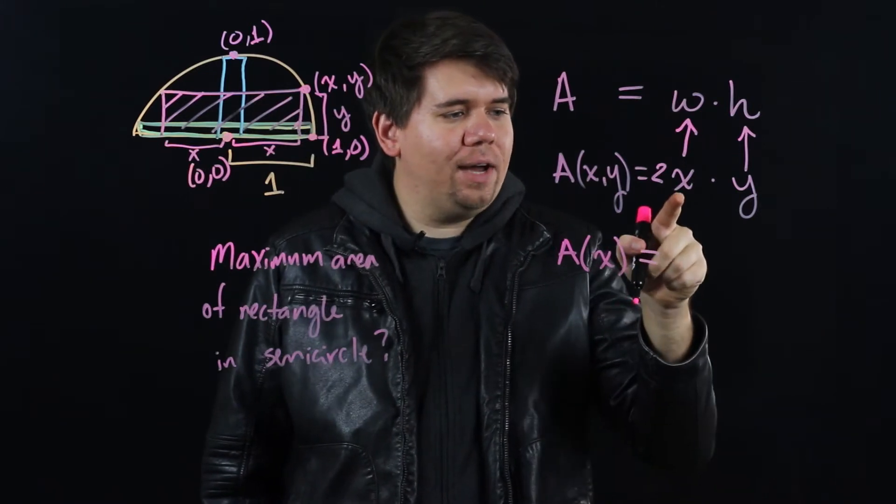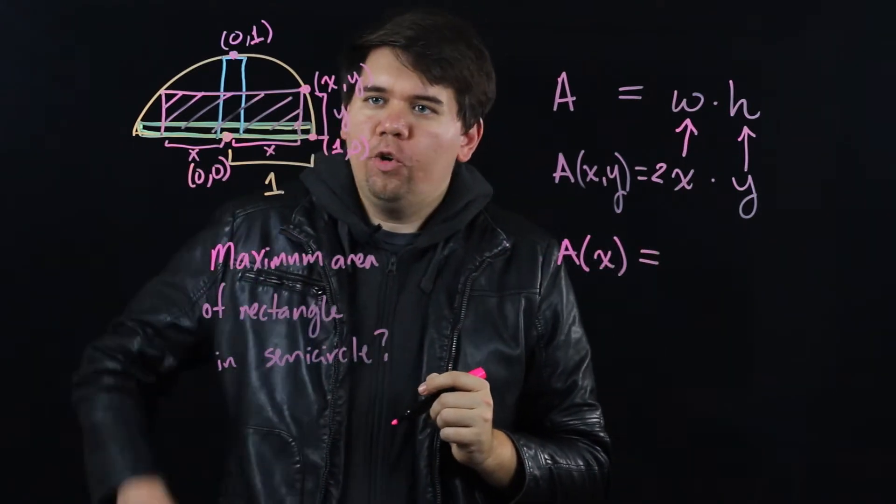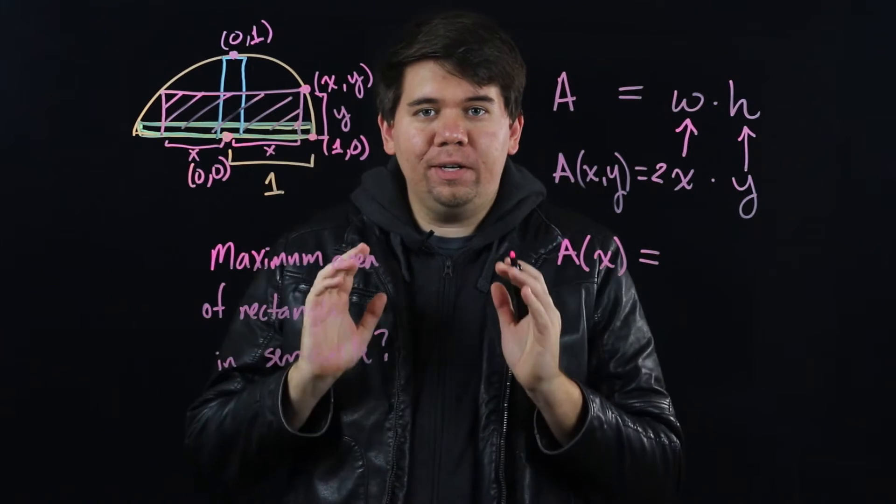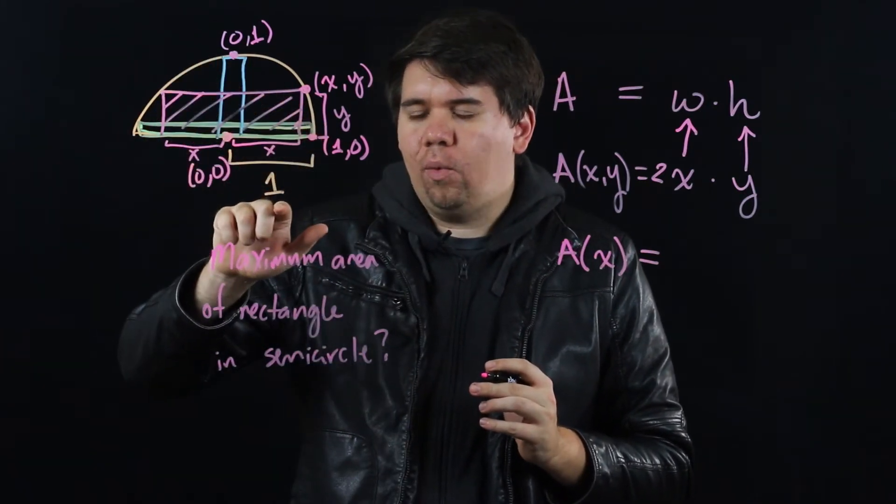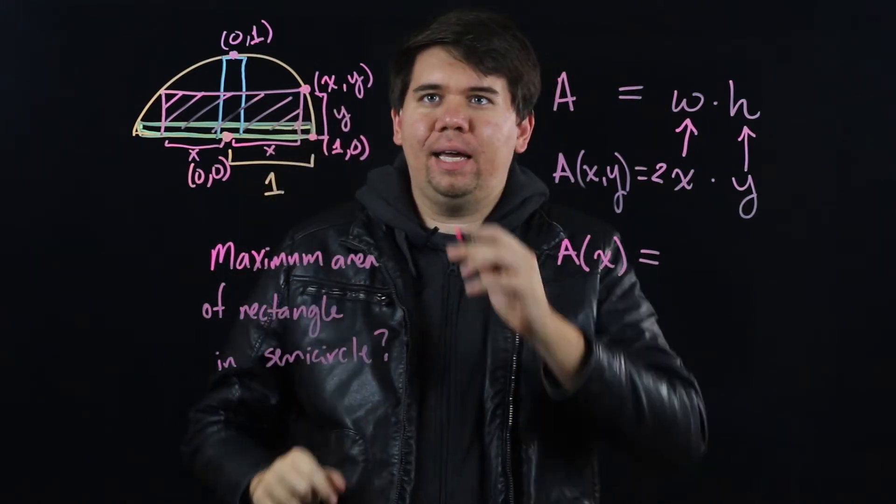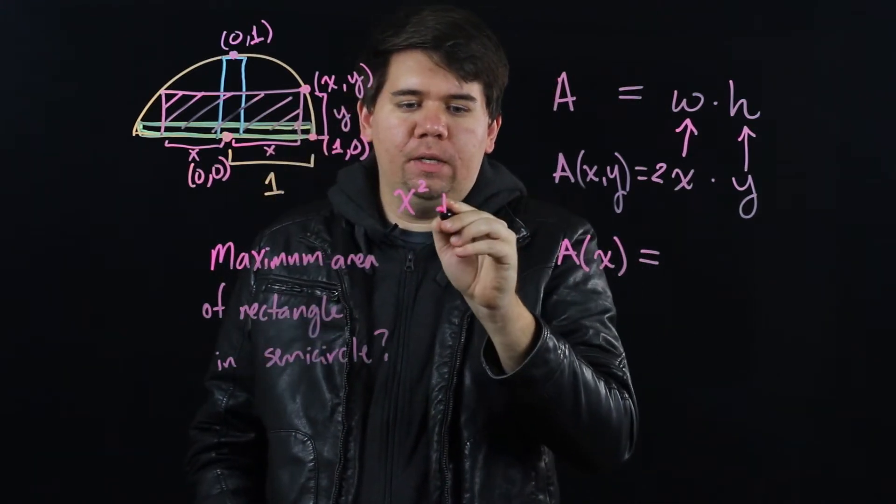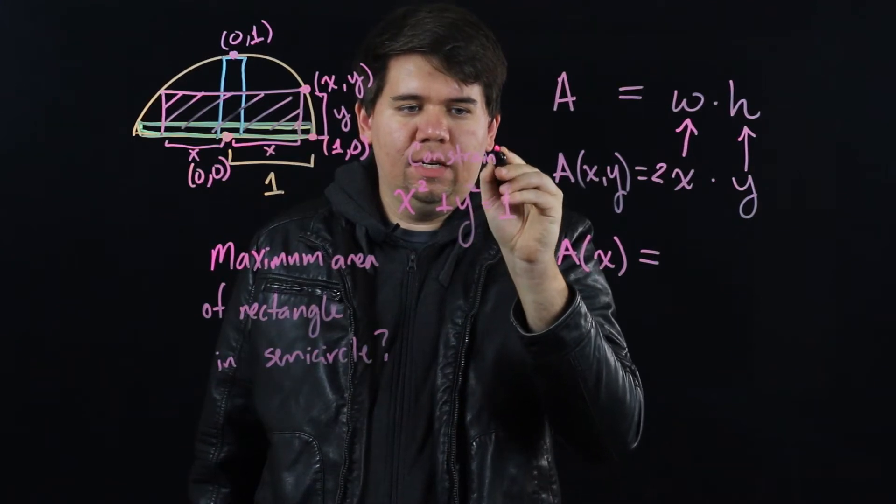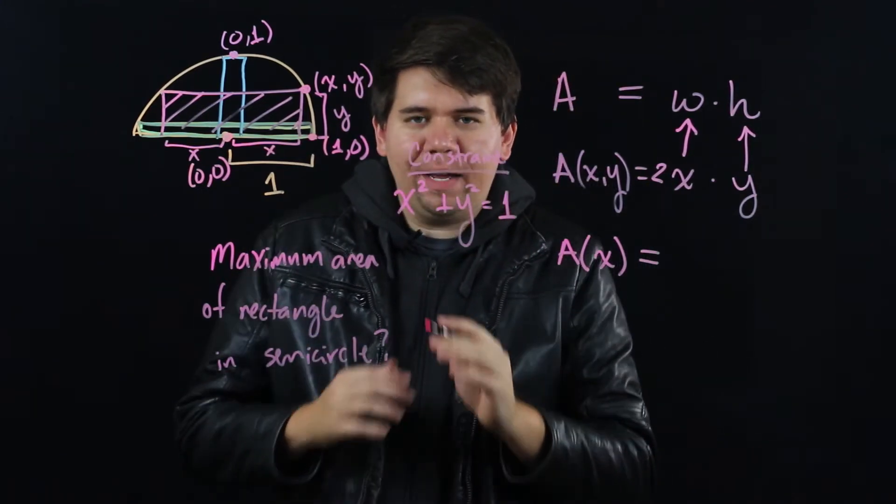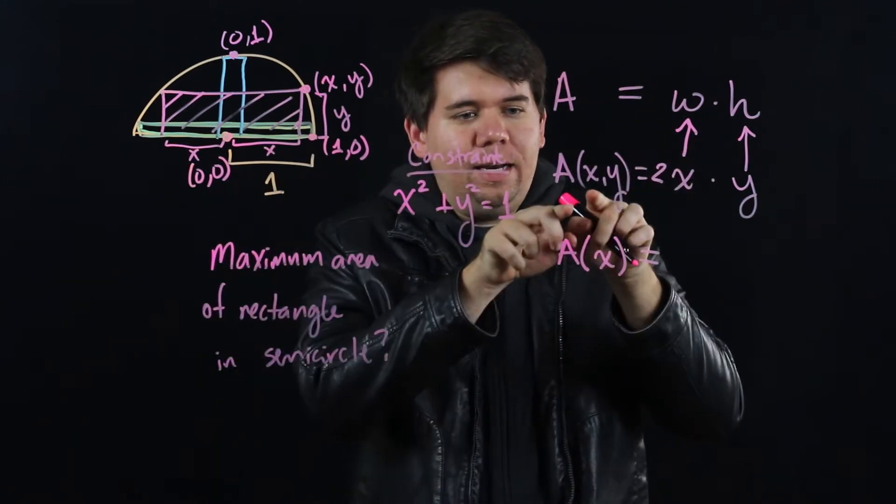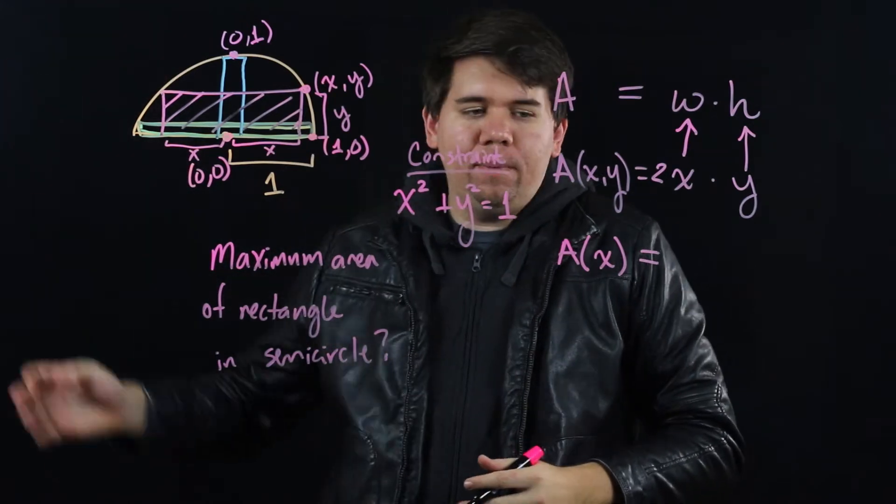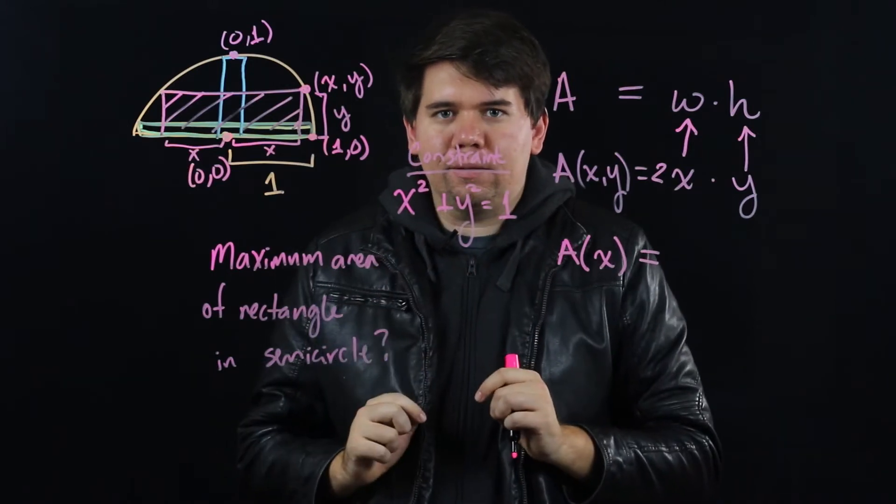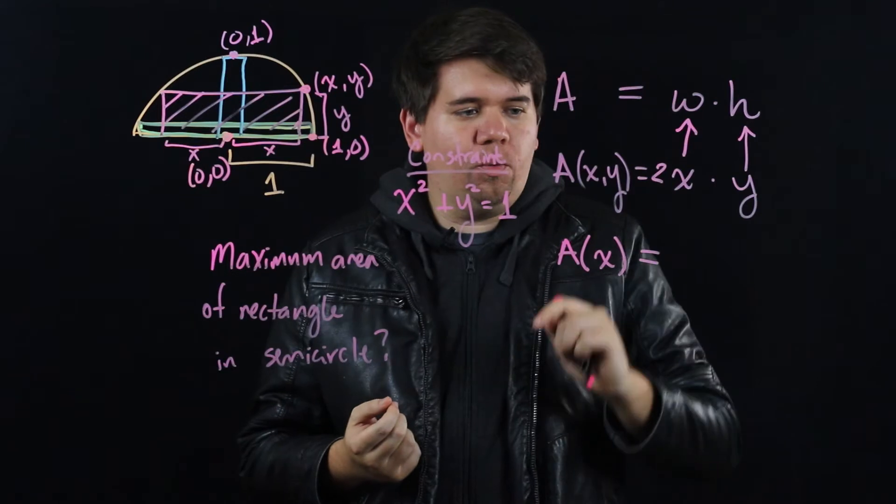In order to do this, I need to think about how x and y are related to each other. We said (x,y) could be any point on the semicircle. That's quite a bit of freedom, but there is a restriction. Since it's on the semicircle of radius 1, we know x and y have to be related by the equation x² + y² = 1. I call this the constraint. It's something that limits what my x and y is. If I didn't have a constraint, I could make my area as big as I wanted, but there's something constraining the problem.